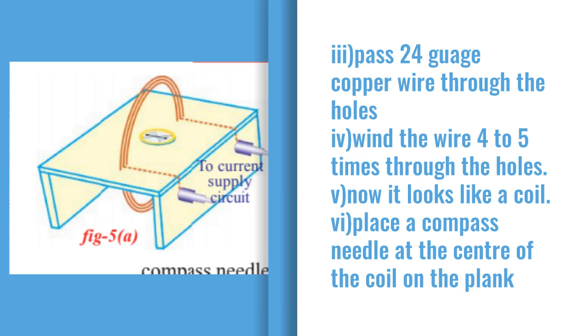Wind that wire 4 to 5 times through the holes. Not single time - you have to wind it 4 to 5 times. Now it looks like a coil. In circular shape, it is called a coil.